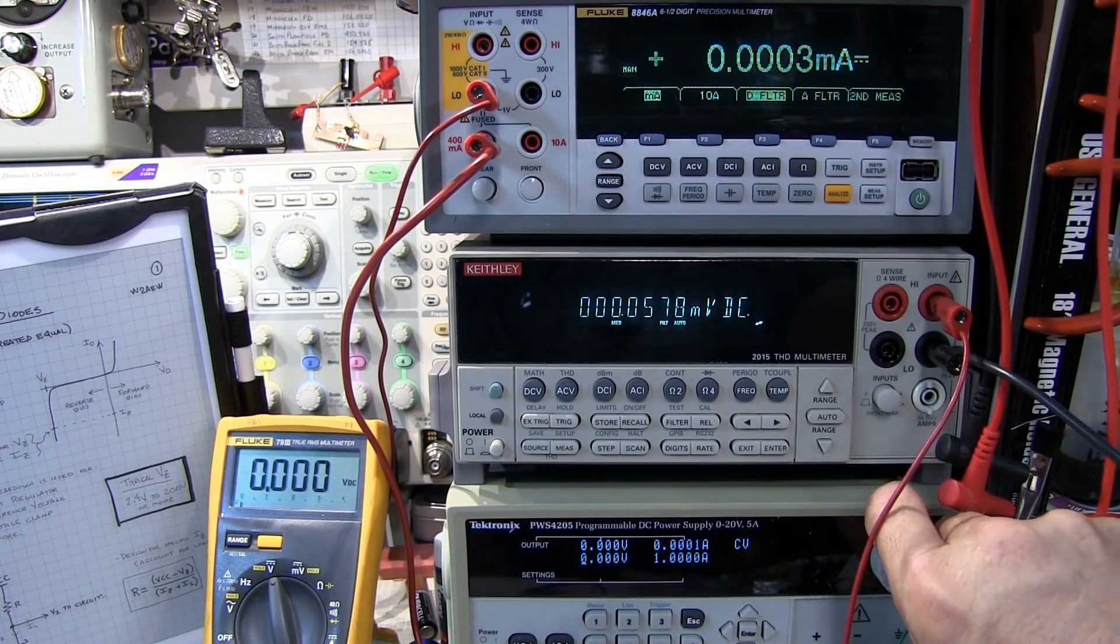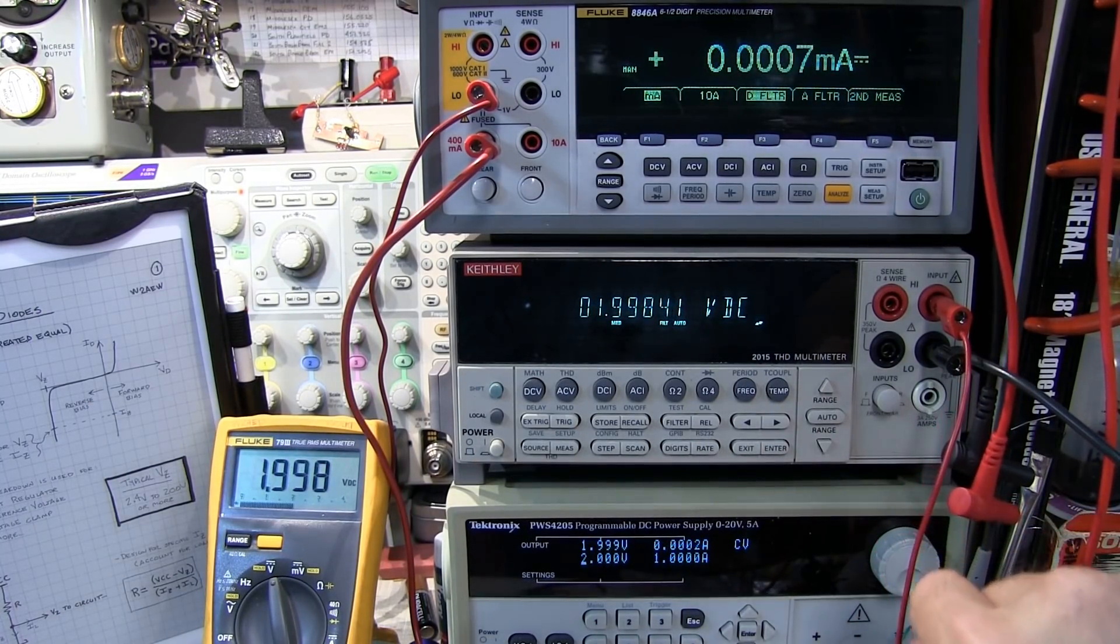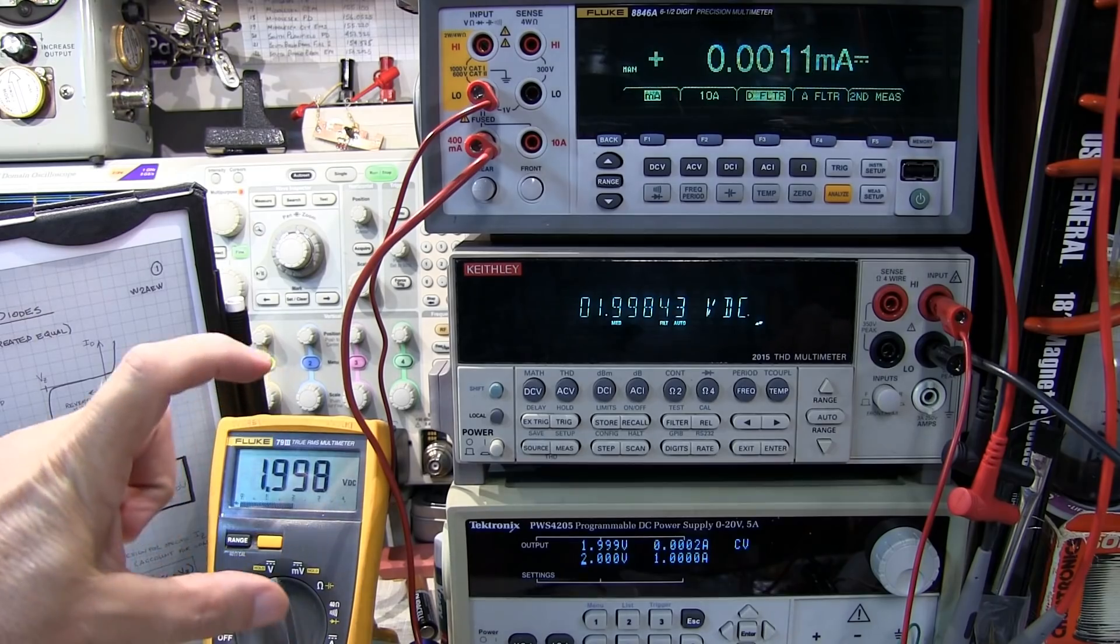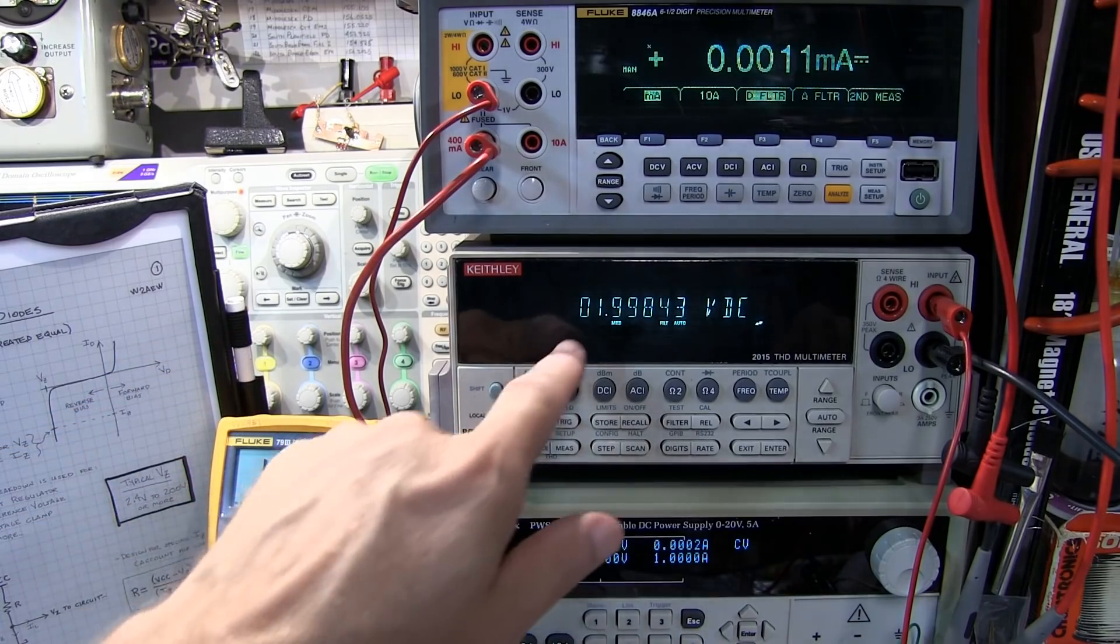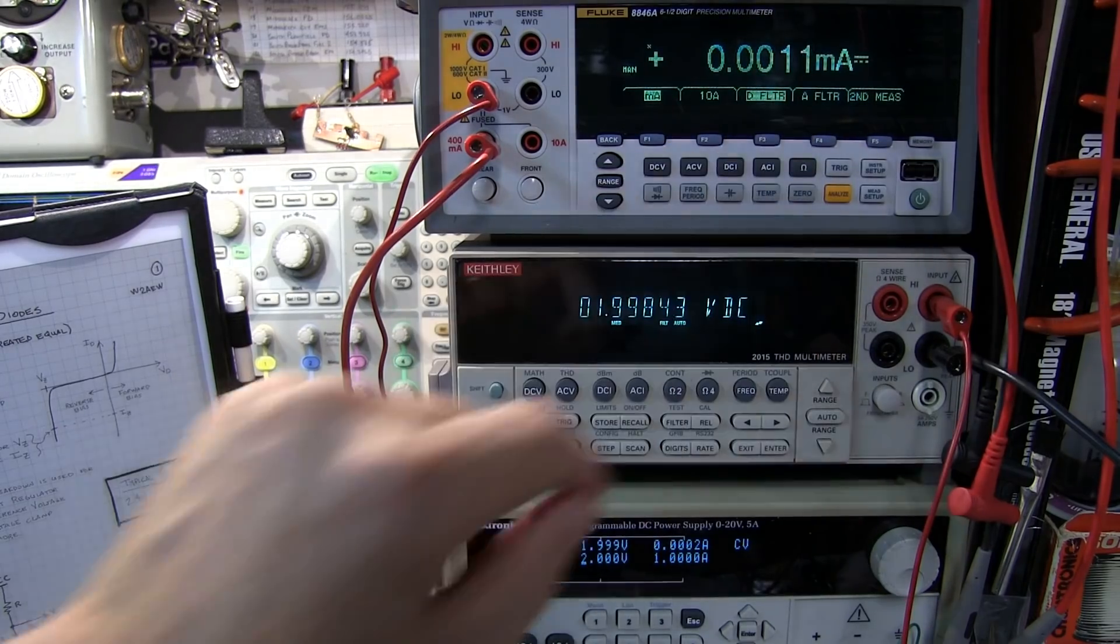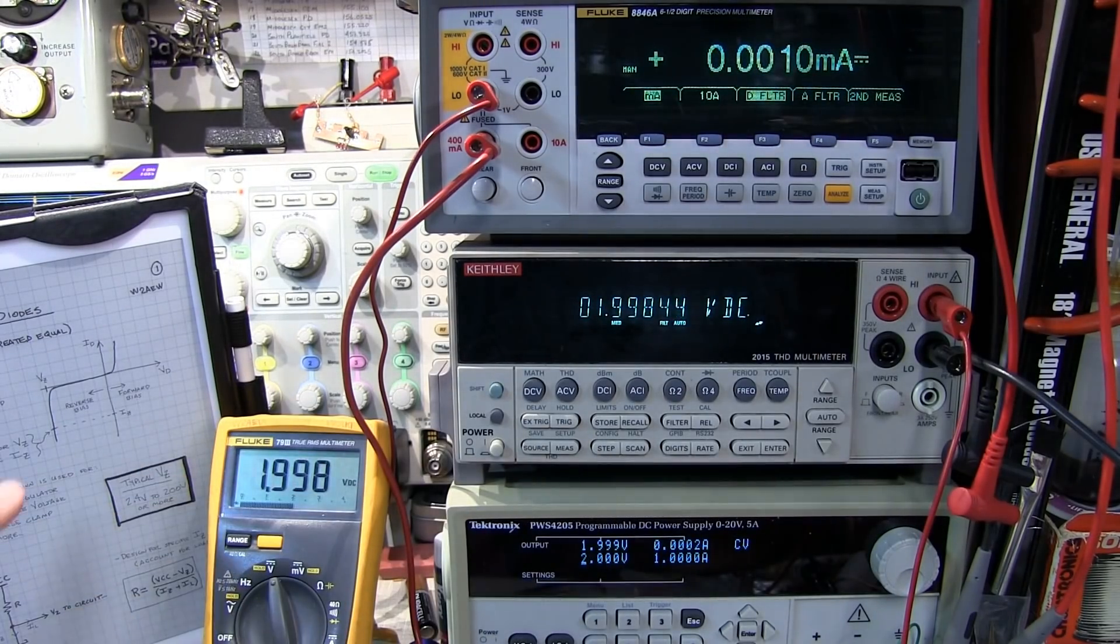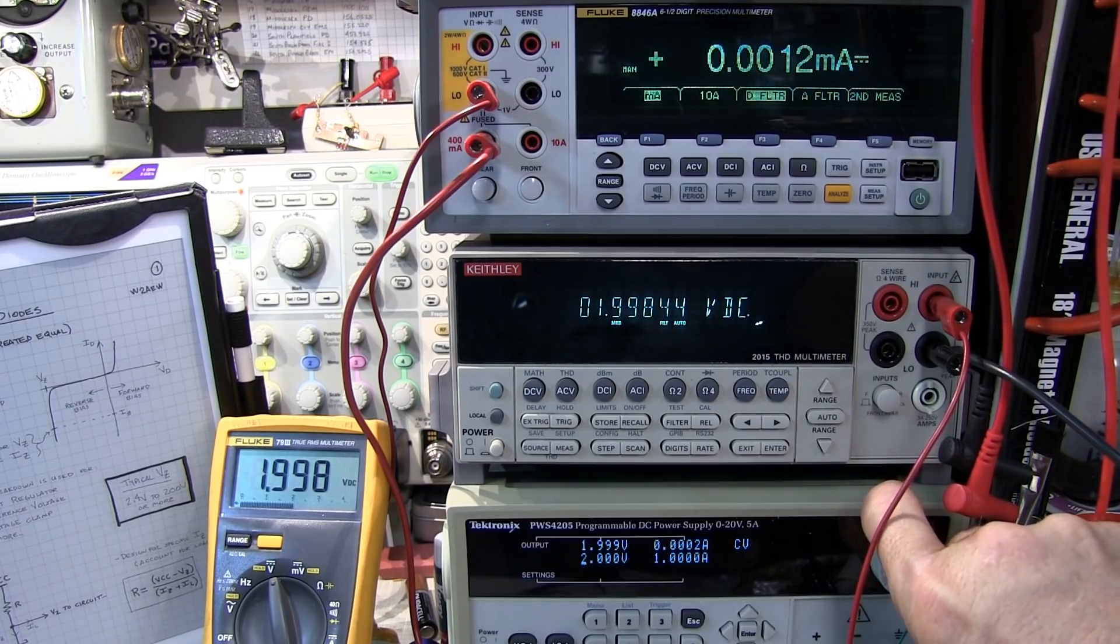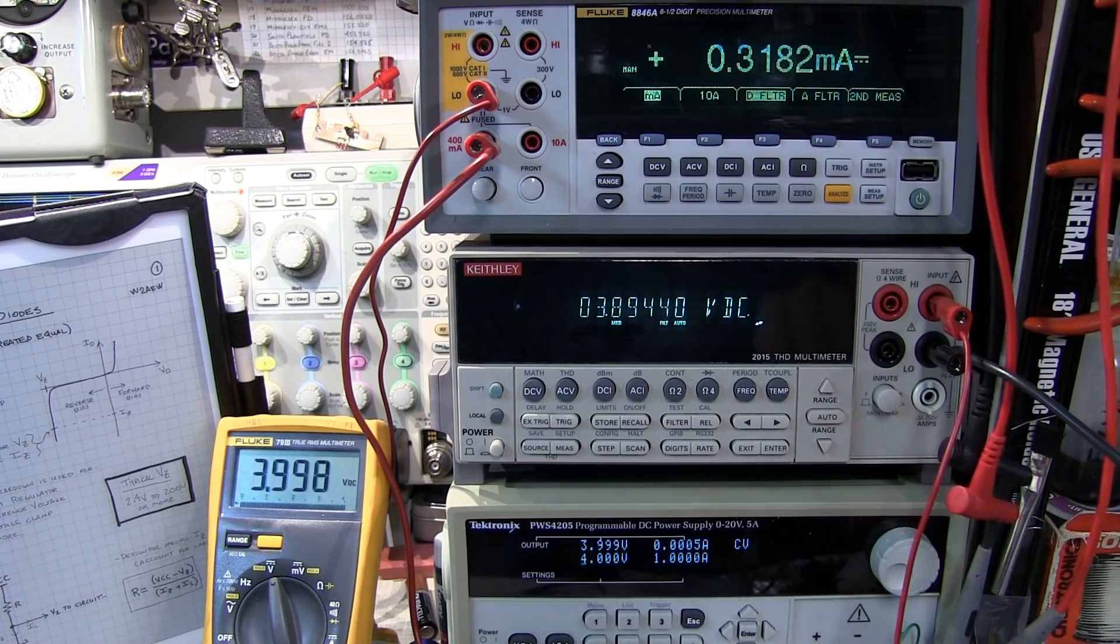If I turn the power supply up to about 2 volts, I've got 2 volts applied across the 330 ohm resistor and Zener diode combination. That same voltage is appearing across just the Zener diode. You can see I've only got about 1 microamp or so of current flowing. We're in this region on the curve where we've got some reverse bias, but we're not conducting yet.